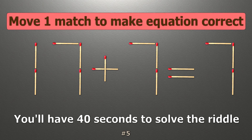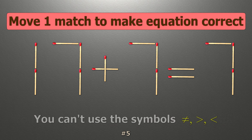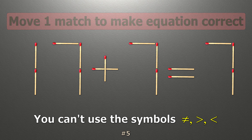We have the equality 17 plus 7 equals 7. Our equality is wrong. We need to move one match to make our equality correct.